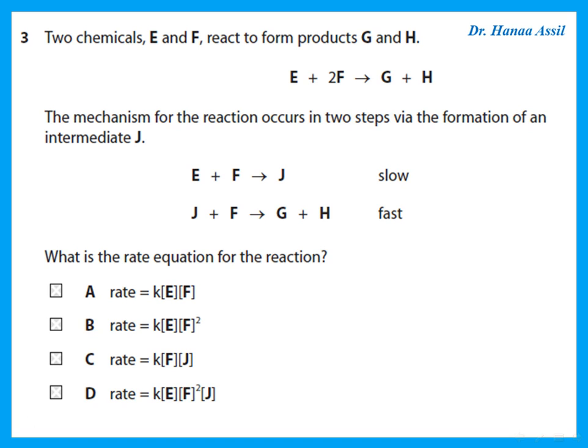Question 3 says two chemicals E and F react to form products G and H. The mechanism occurs in two steps via an intermediate J. E plus F gives J — the slow step — and then J reacts with F to form G and H. The rate involves the reactants in the slow step, so rate = K[E]¹[F]¹.